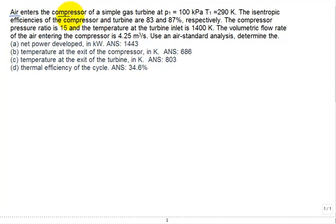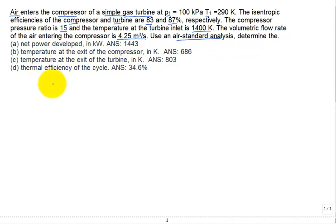Air enters the compressor of a simple gas turbine at pressure P1 and temperature T1. The isentropic efficiencies of the compressor and turbine are 83% and 87% respectively. The compressor pressure ratio is 15 and the temperature at the turbine inlet is 1400 Kelvin. Volumetric flow rate of air entering the compressor is 4.25 cubic meters per second. Use an air standard analysis to determine the net power developed, the temperature at the exit of the compressor, the temperature at the exit of the turbine, and the thermal efficiency of the cycle.